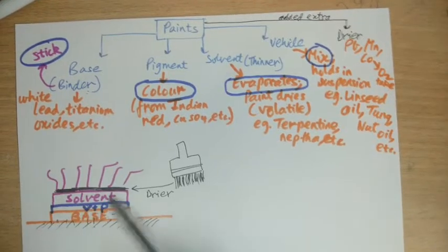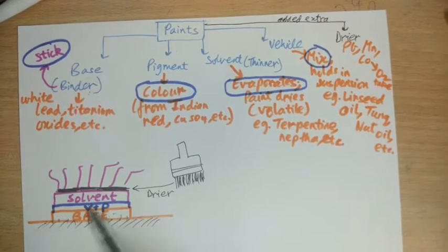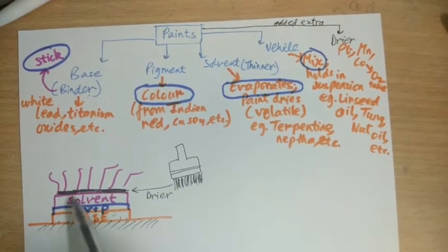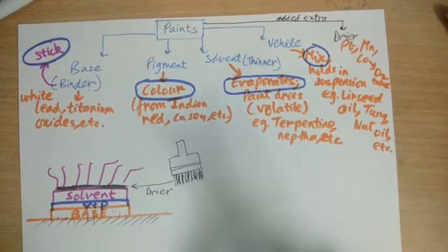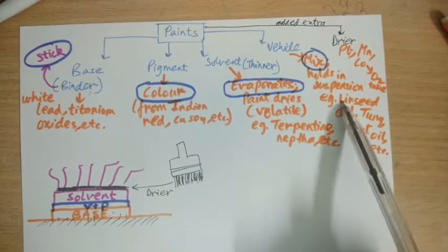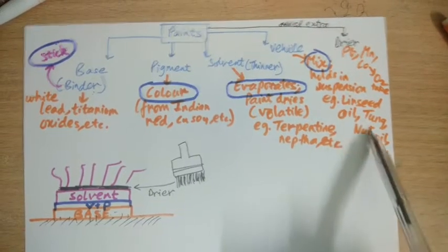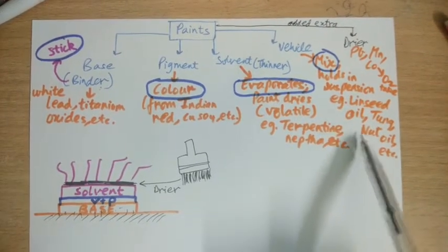I've drawn this for just understanding, but actually this vehicle is flowing from base to solvent and all over this place while solvent slowly evaporates. Finally, the vehicle is actually linseed oil or tung oil or nut oil.